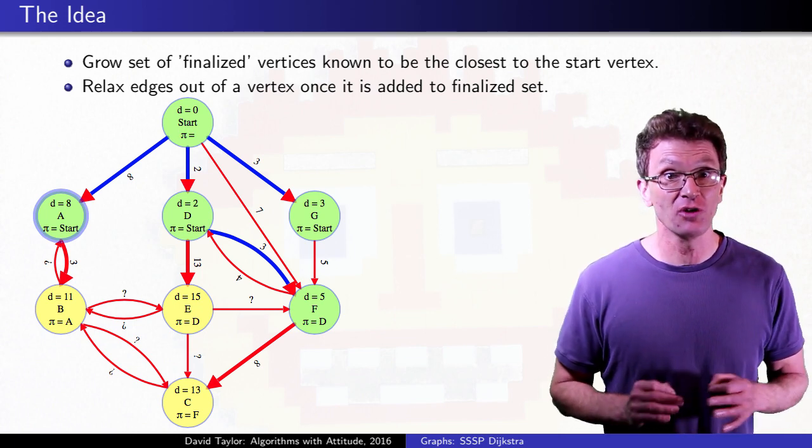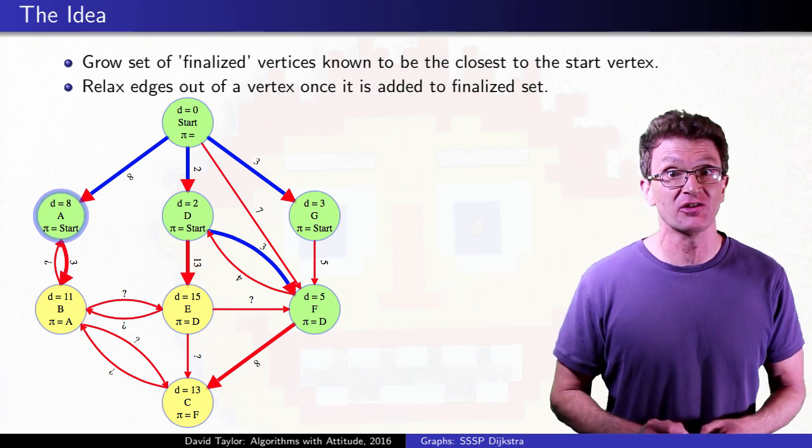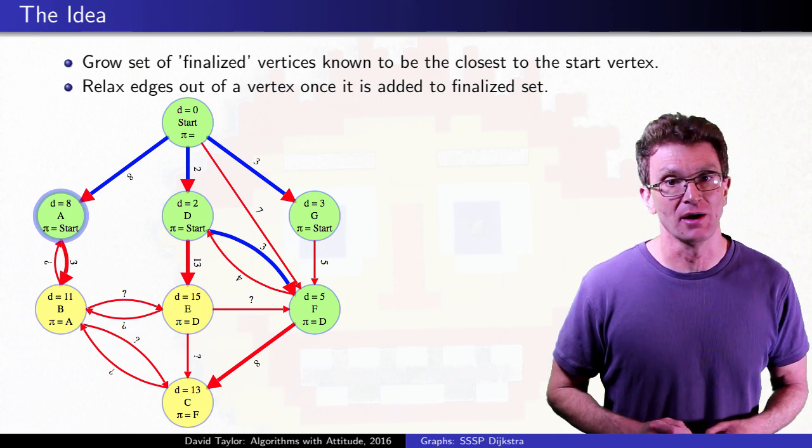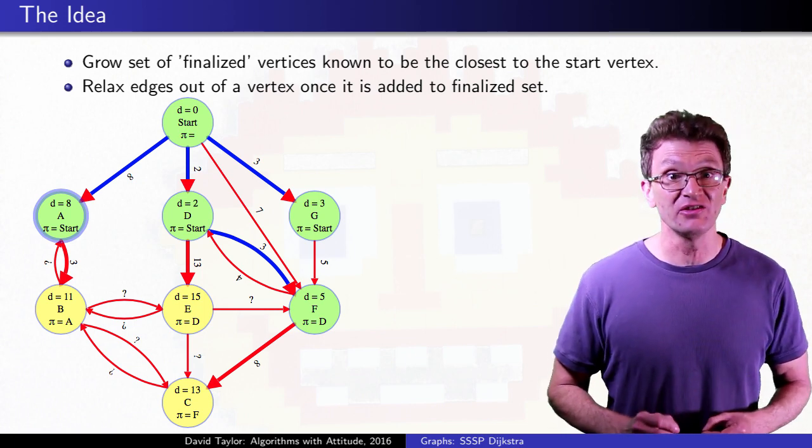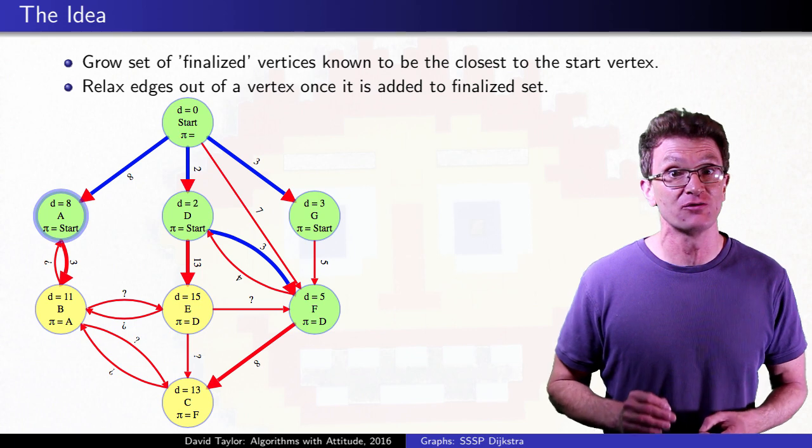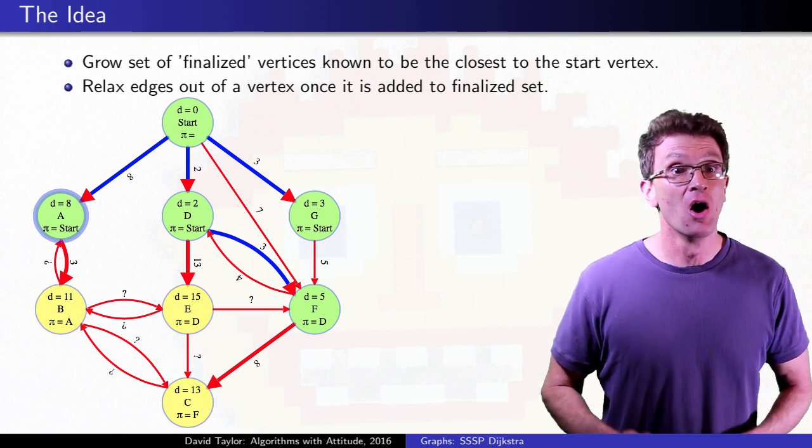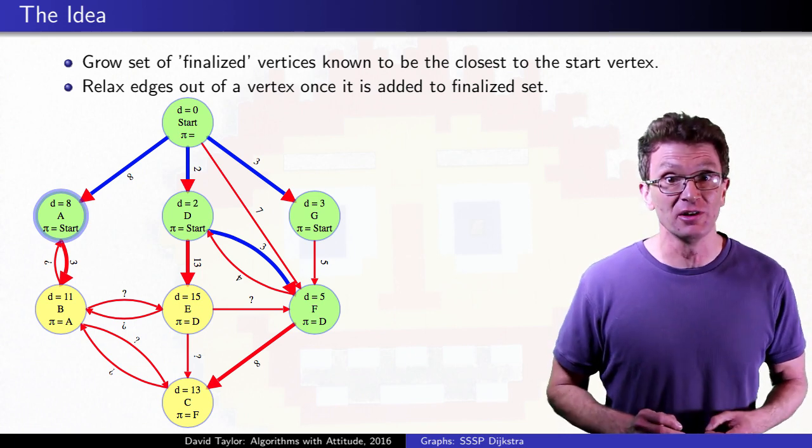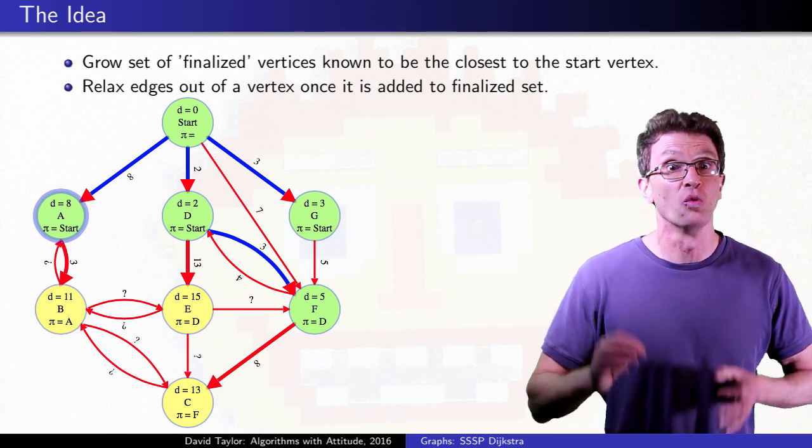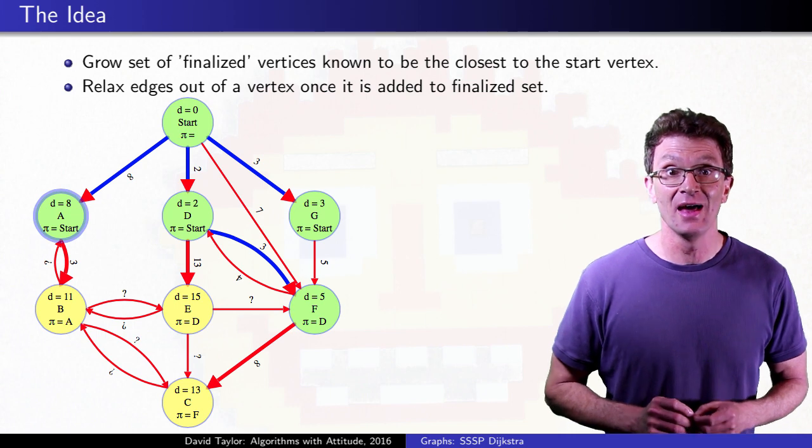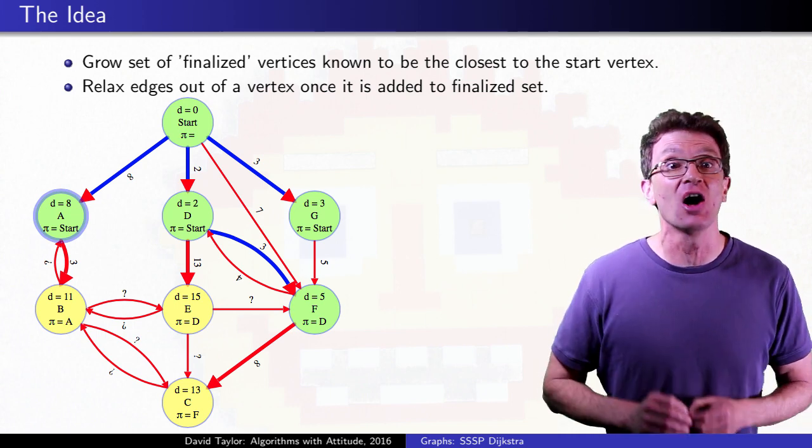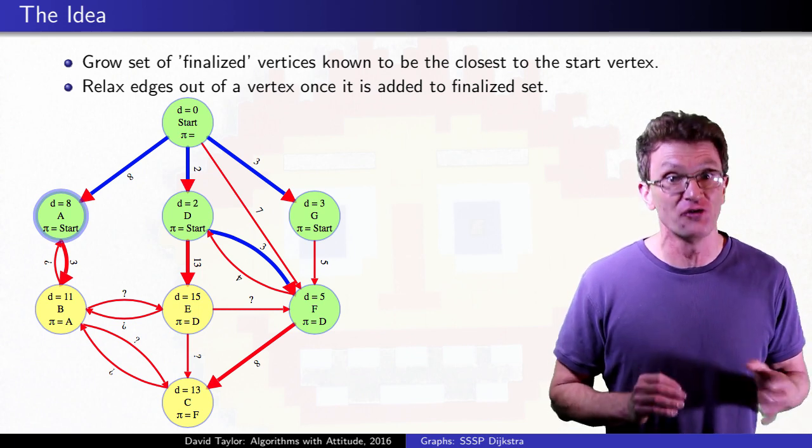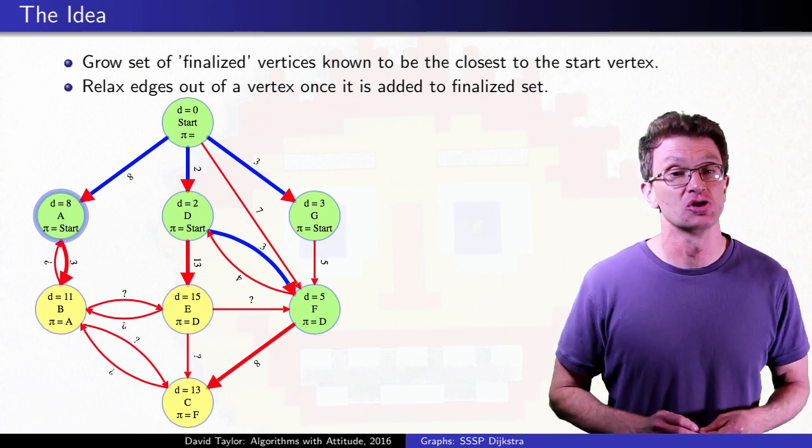We assume that for each of those vertices, after a vertex got its correct shortest distance, all outgoing edges from that vertex were relaxed. You can see the current distance estimates and pi values to the non-finished vertices B, C, and E, or 11, 13, and 15. The paths for each of those estimates start with the shortest path to one of the finished vertices, and then have a single edge to the unfinished vertex at the end, where that last edge was relaxed after the finished vertex had its correct shortest path distance.